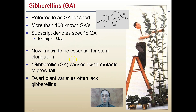Gibberellin is known to be essential for stem elongation, and GA causes dwarf mutant plants to actually grow tall. If you have a dwarf mutant and you add GAs to it, you can actually get that plant to return to close to normal height or at least get taller than its mutant variety. Dwarf plants are often plants that lack gibberellins, and that's what causes their dwarfism.